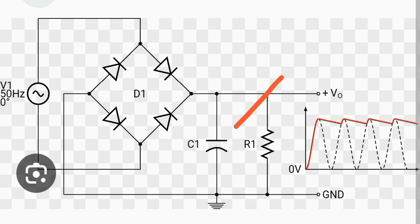If you remove the capacitor, the output is the pulsating DC shown by the dotted black lines. This circuit is called a full wave bridge rectifier circuit. You must choose a proper value of R and C so that the RC time constant determines the charging and discharging rate of the capacitor.